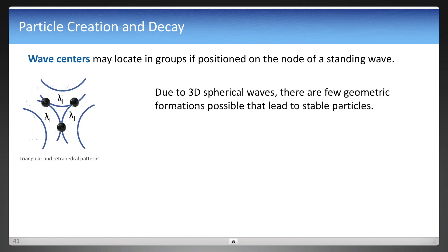That is a sine wave form, but there are actually spherical waves — 3D spherical waves. At least in 2D view, this is what it might look like as those nodes are where the waves converge. It forms a triangular pattern in 2D, and in 3D it is a tetrahedron — a tetrahedral pattern.